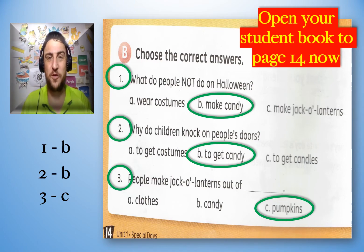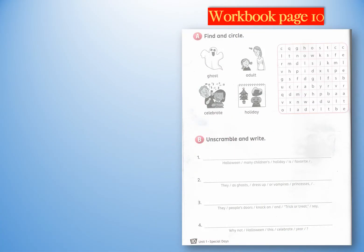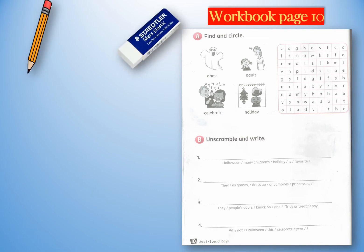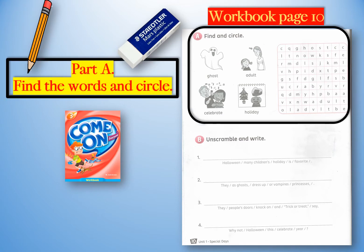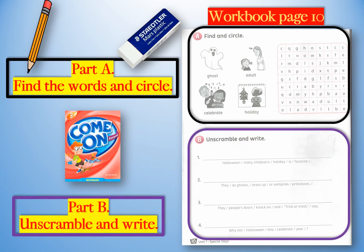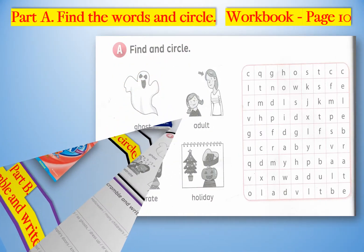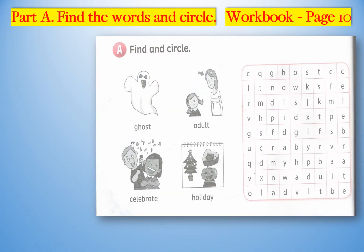Great, let's move on. We are now going to look at the workbook — workbook page 10. You will need a pencil and an eraser, and obviously you will need your workbook. Please look at Part A on page 10: this is 'Find and circle' — find the words and circle them. Then you do Part B: Unscramble and write.